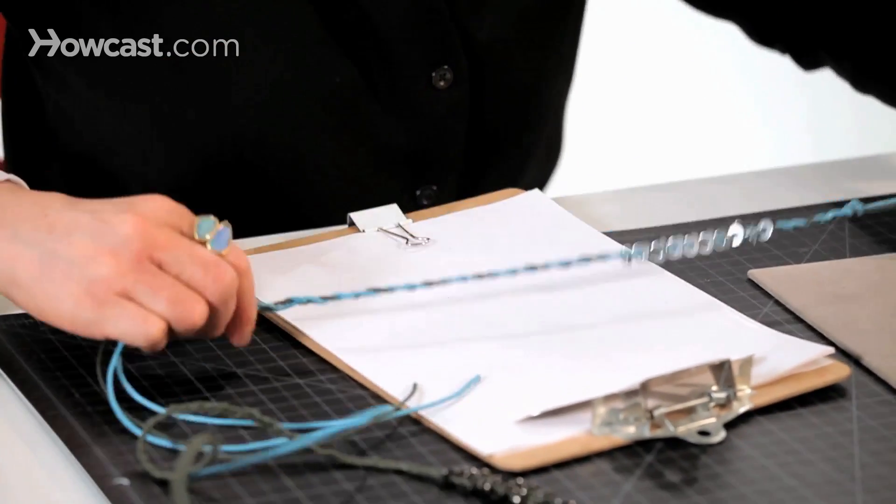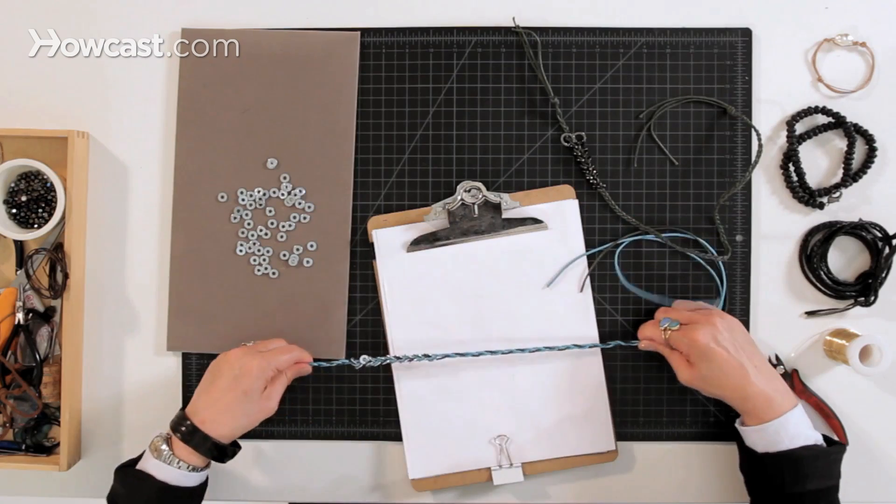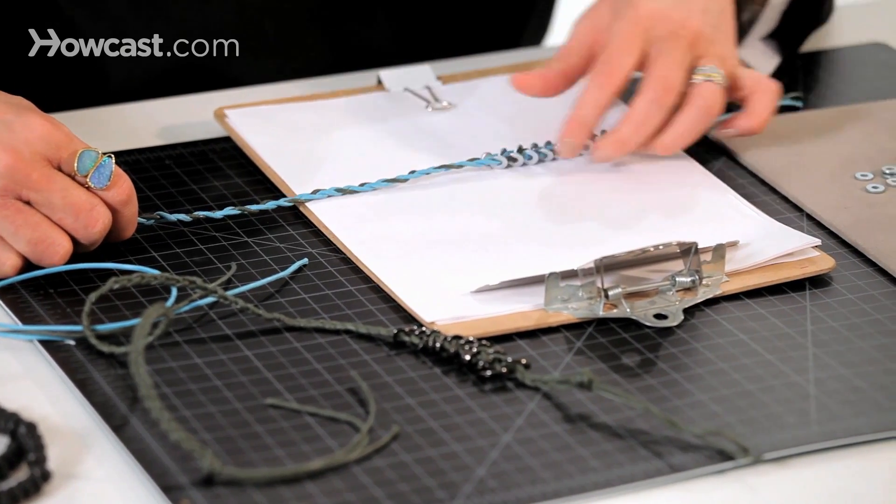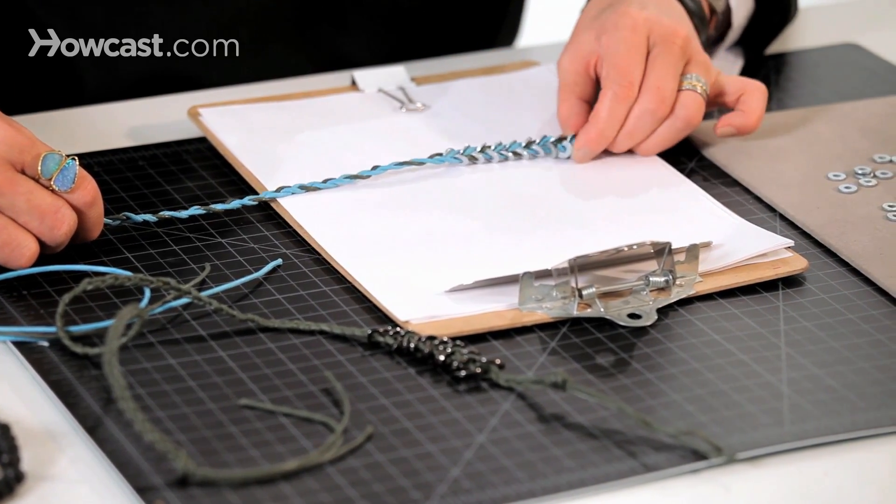And then we're going to stop it over here for now. And then you want to just kind of straighten it by pulling it a little bit just to make the tension all even. And then you see how your washers are all nicely stacked.